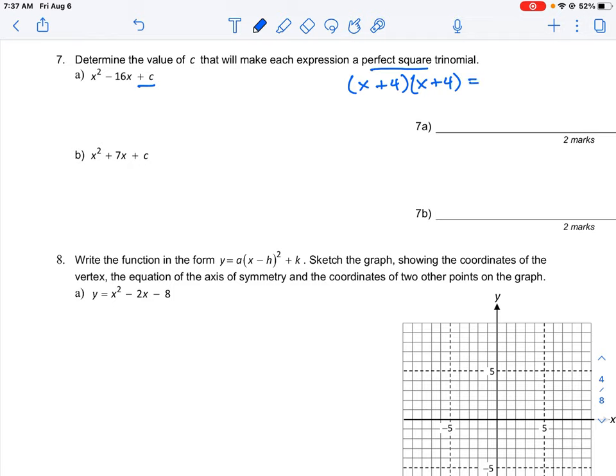If we expand this using FOIL, we get x squared plus 4x plus 4x plus 16. So we can simplify that further into x squared plus 8x plus 16.